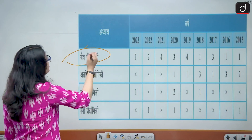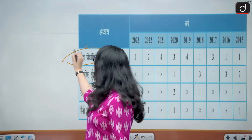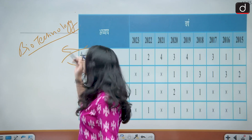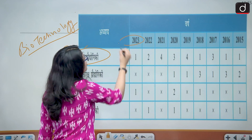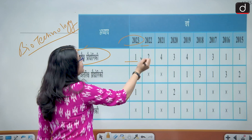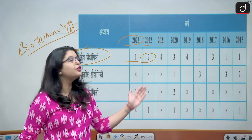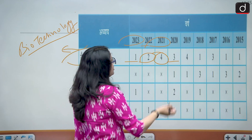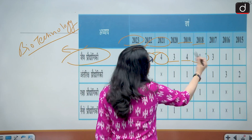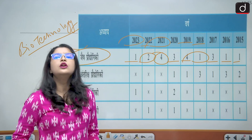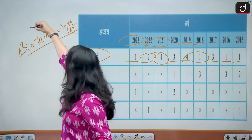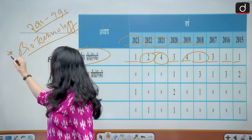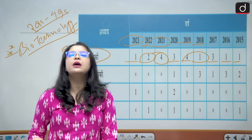The first important topic is biotechnology. In the year 2023, one question was asked. In 2022, two questions were asked. In 2021, there was a reversal of trend — four questions. Then 2020 three questions, 2019 four questions, 2018 one question, and then three, one, and one question respectively. So you can expect a minimum of two questions and a maximum of four questions from this topic, making it very important for you.